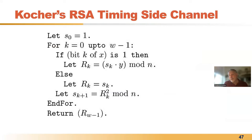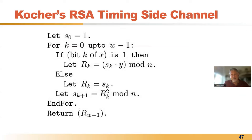It's not just the hardware and compiler that creates side channels — programmers also create side channels and contribute to the problem as much as the underlying system. This is a classic side channel, one of the first really exploited. It's called Kocher's RSA timing side channel.